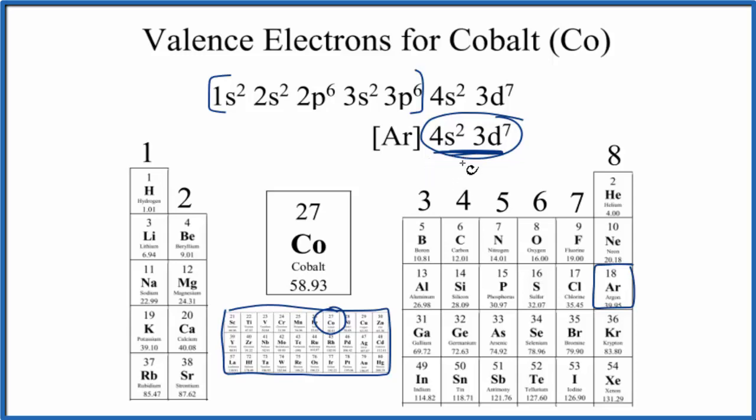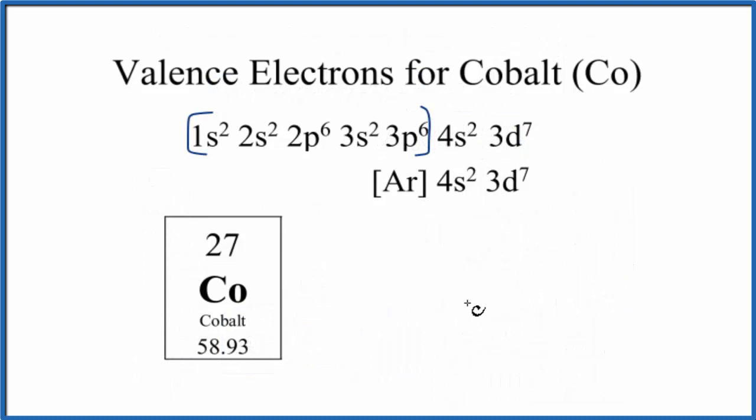Let's take a look at what that means when cobalt forms chemical bonds. Cobalt, because it's a transition metal, loses different numbers of valence electrons depending on what it bonds to. Most commonly, cobalt loses 2 or 3 valence electrons. If it loses 2, we have cobalt 2 plus, and the configuration would look like this.